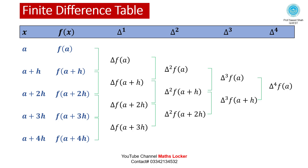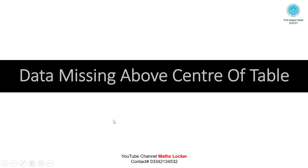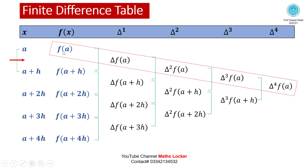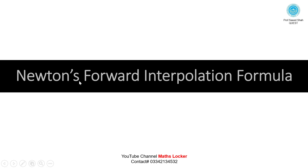If data is missing above the center of the table and lies between two values a and a+h, the value against a is f(a). We draw the forward diagonal and apply Newton's Forward Interpolation Formula.